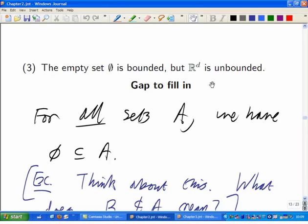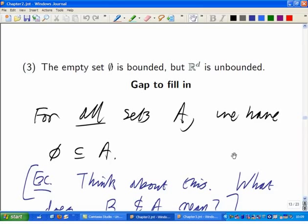Then we said the empty set is bounded, but if you take the whole of R to the d it isn't. So the whole of R^d is an unbounded set because it goes off in every direction to infinity, and you can't enclose it in any particular finite radius ball. I didn't prove that for you properly.